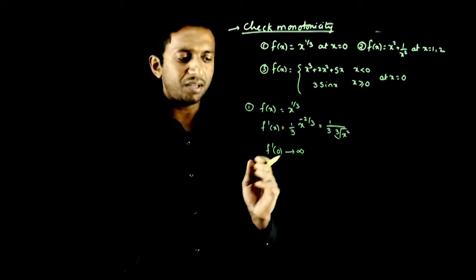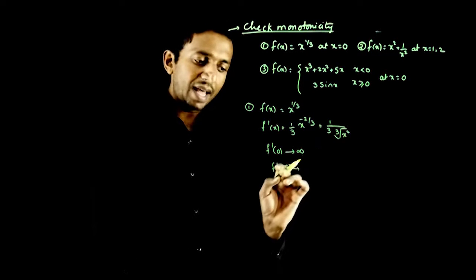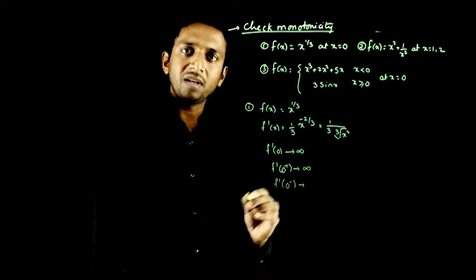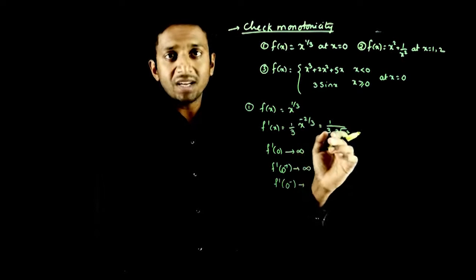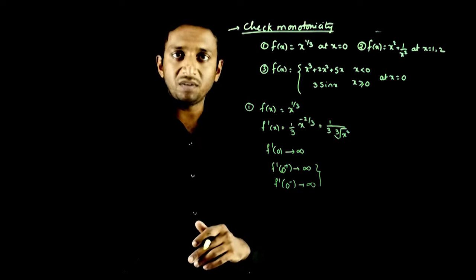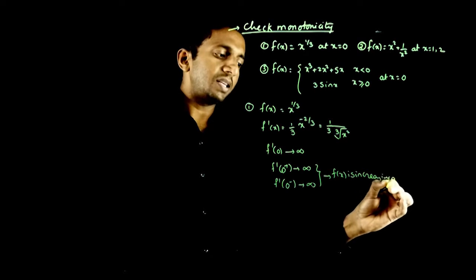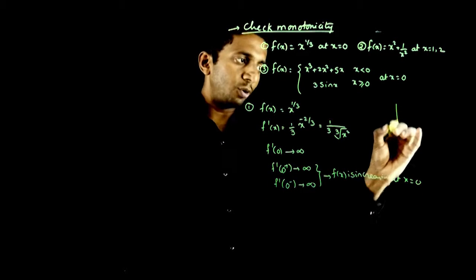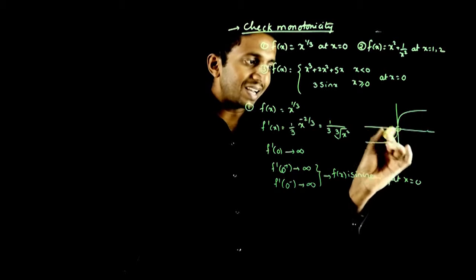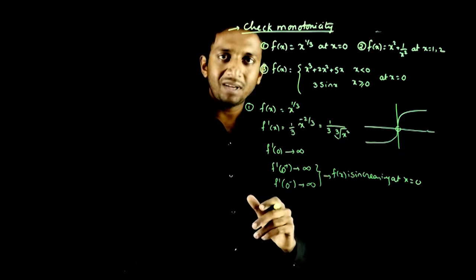The function can still be increasing or decreasing. In the right neighborhood of 0: as x → 0⁺, x² → 0⁺, so 1/x² → +∞. At 0⁻: if x → 0⁻, squaring it gives 0⁺, so again 1/0⁺ → +∞. This means both the right and left side slopes are positive. Hence, f(x) is increasing at x = 0.